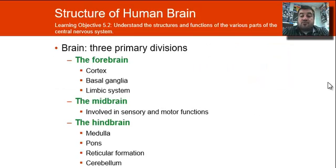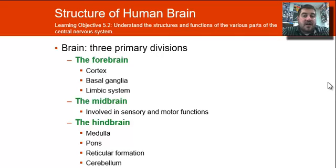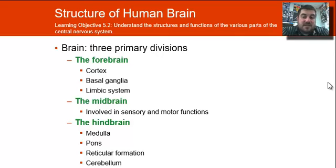Now let's go into the structure of the brain. Basically there are three main divisions: the forebrain, the midbrain, and the hindbrain. The hindbrain is at the base of your skull — it was the first to develop — and it contains the medulla, the pons, the reticular formation, and the cerebellum.